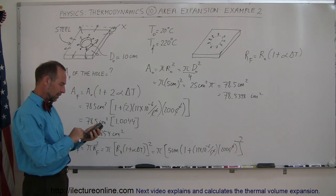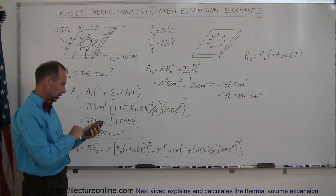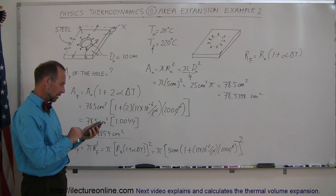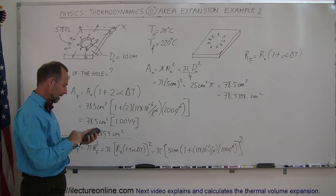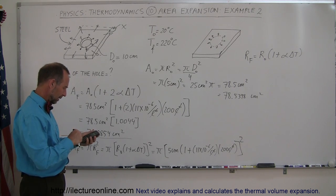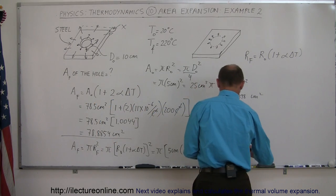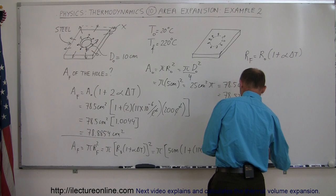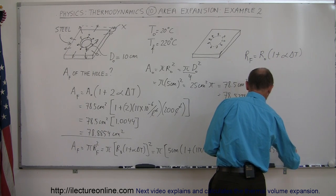Let's figure it out like this and see if we get a slightly different answer. So we have 11e6 minus times 200. We add that to 1, and then we multiply it times 5, and then we square that number, and then we multiply it times pi. And what do we get? We get this is equal to 78.8858 centimeters square.